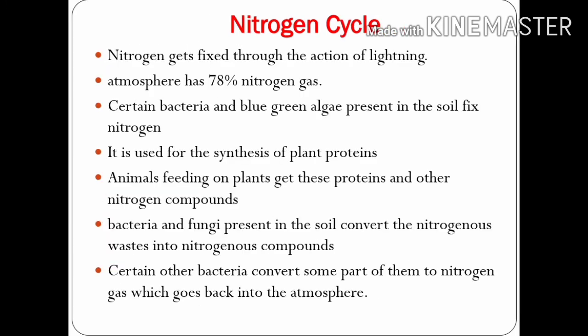Now let's discuss the nitrogen cycle. Nitrogen gets fixed through the action of lightning. The atmosphere has almost 78% nitrogen gas, but this nitrogen gas cannot be utilized by plants directly.